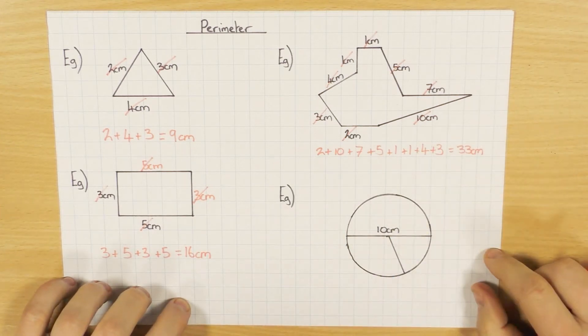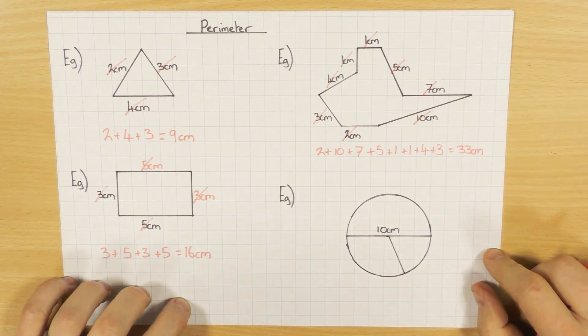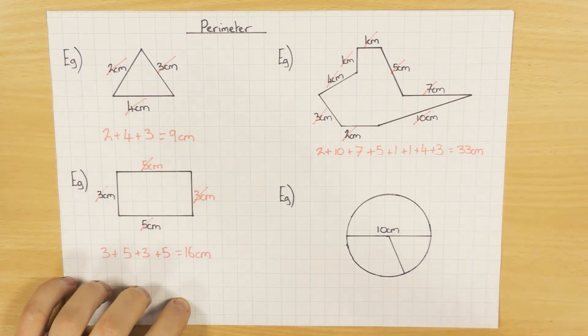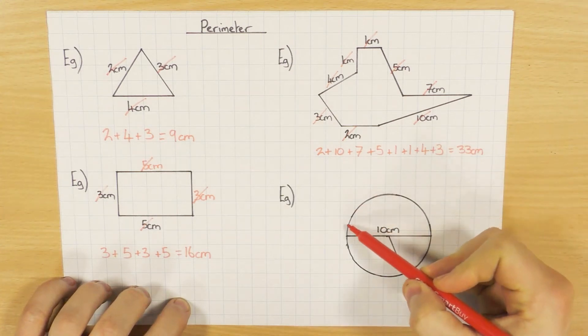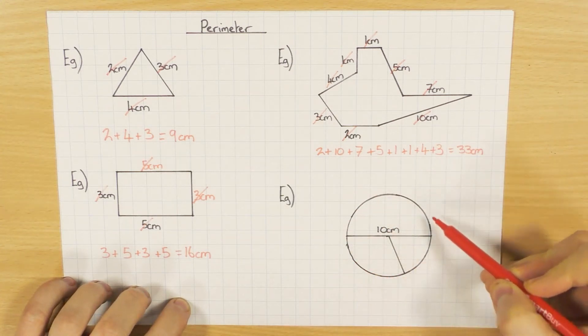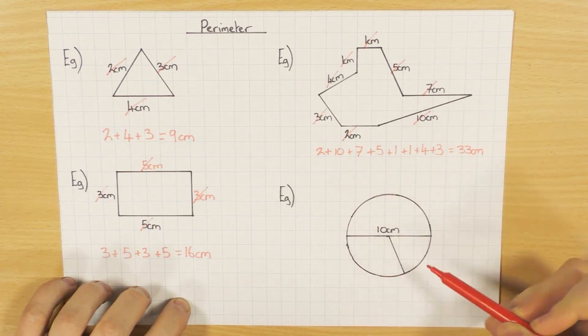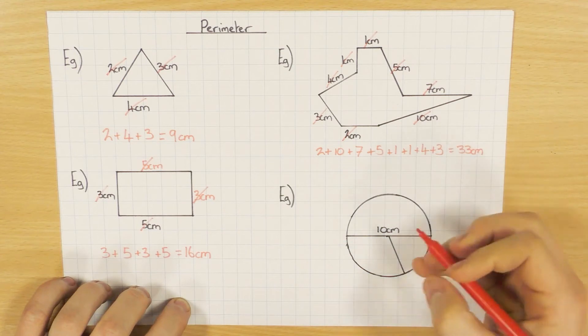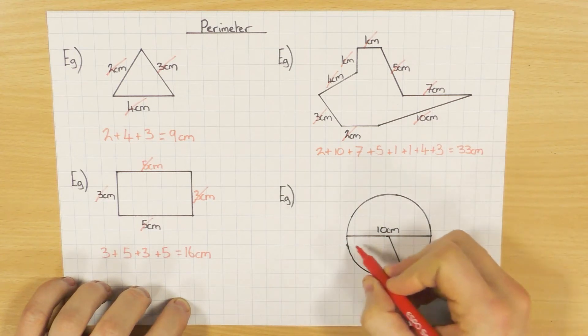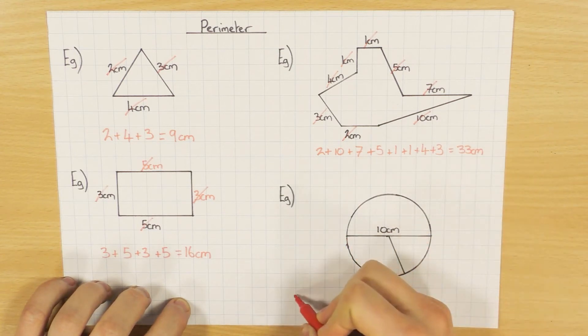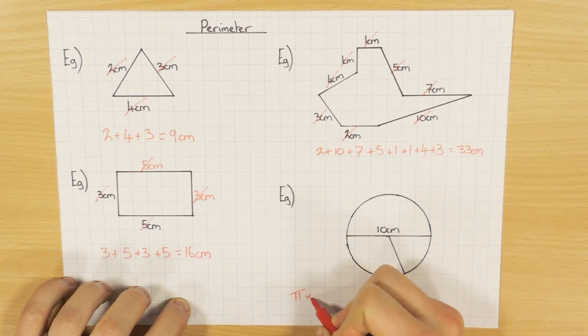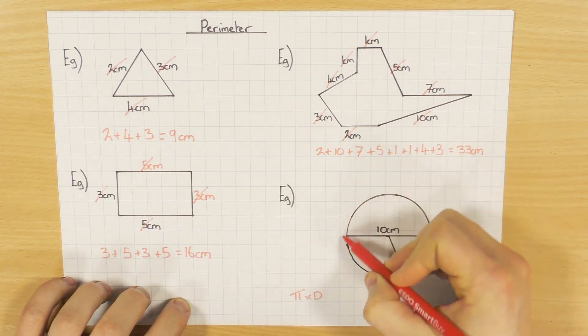This one is the circle. The perimeter is the length around the outside, but with a circle it's called the circumference. There are two formulas you can use. If you have the diameter, it's just pi times the diameter, which gives you the circumference.